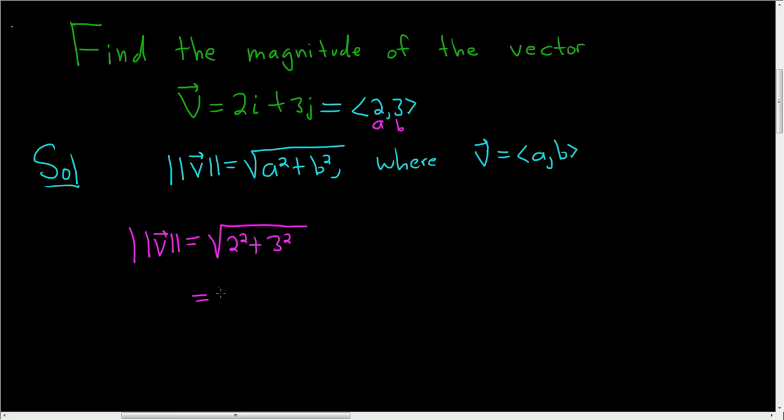So 2 squared is 4 and 3 squared is 9. So we end up with the square root of 13. And that's it.